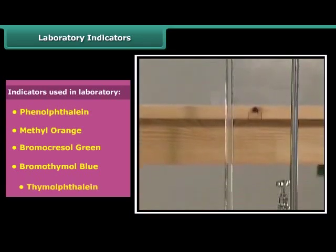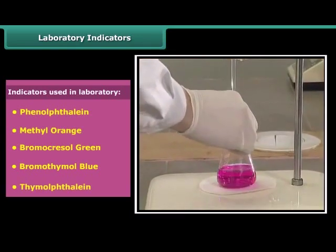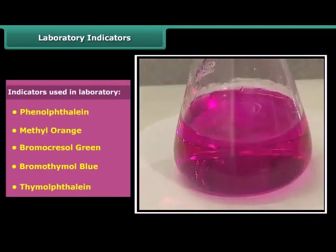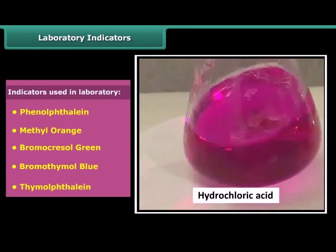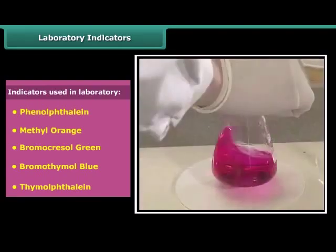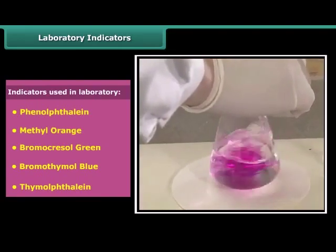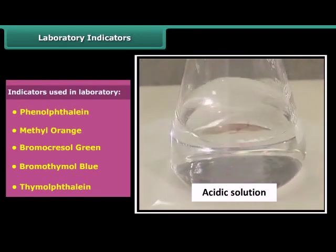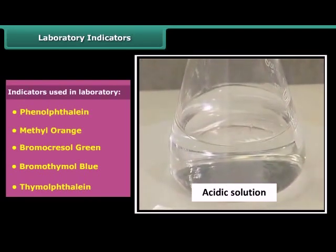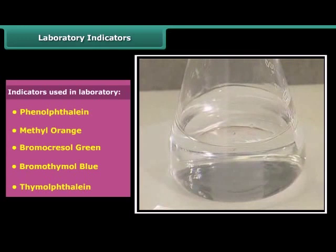After some time, the pink color slowly appears in the solution. When we add more sodium hydroxide, the pink color becomes brighter. On adding a drop of hydrochloric acid, this solution again becomes colorless. So phenolphthalein appears pink in alkaline solution and colorless in acidic solution. It is colorless in neutral medium.